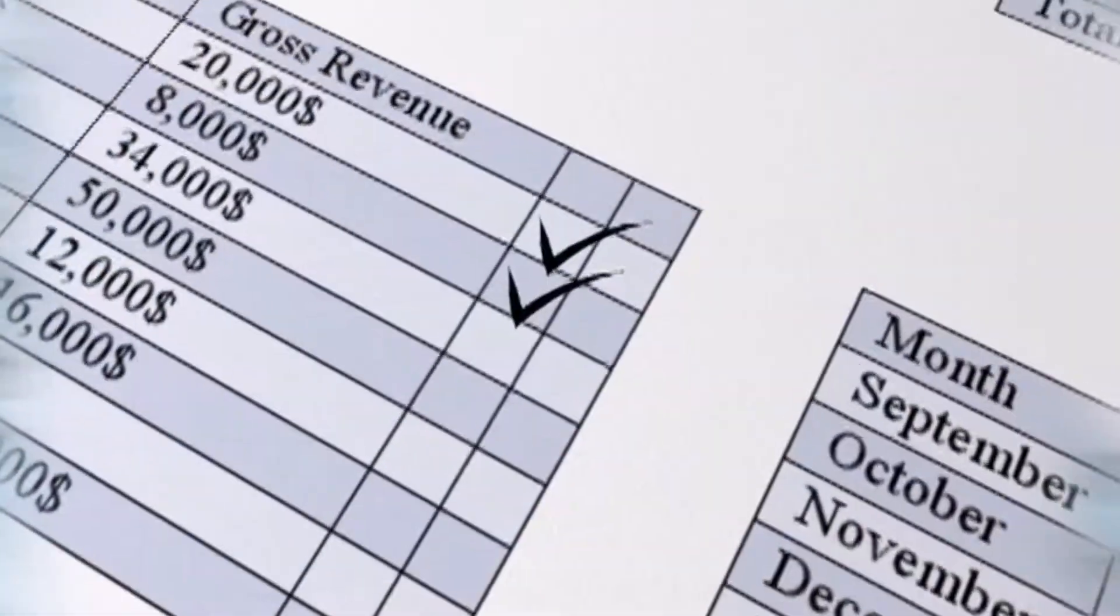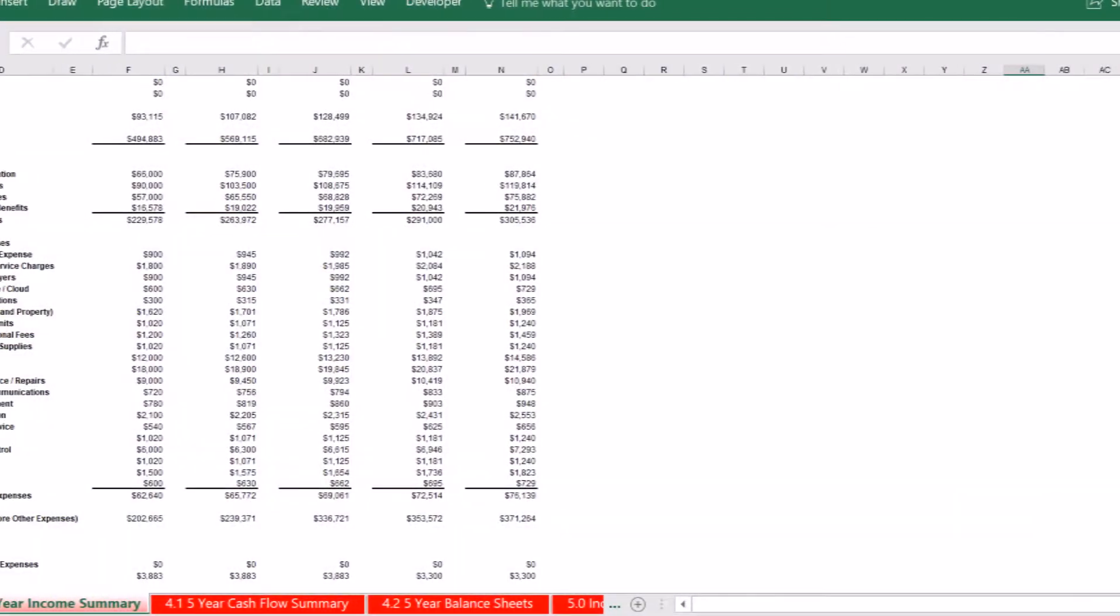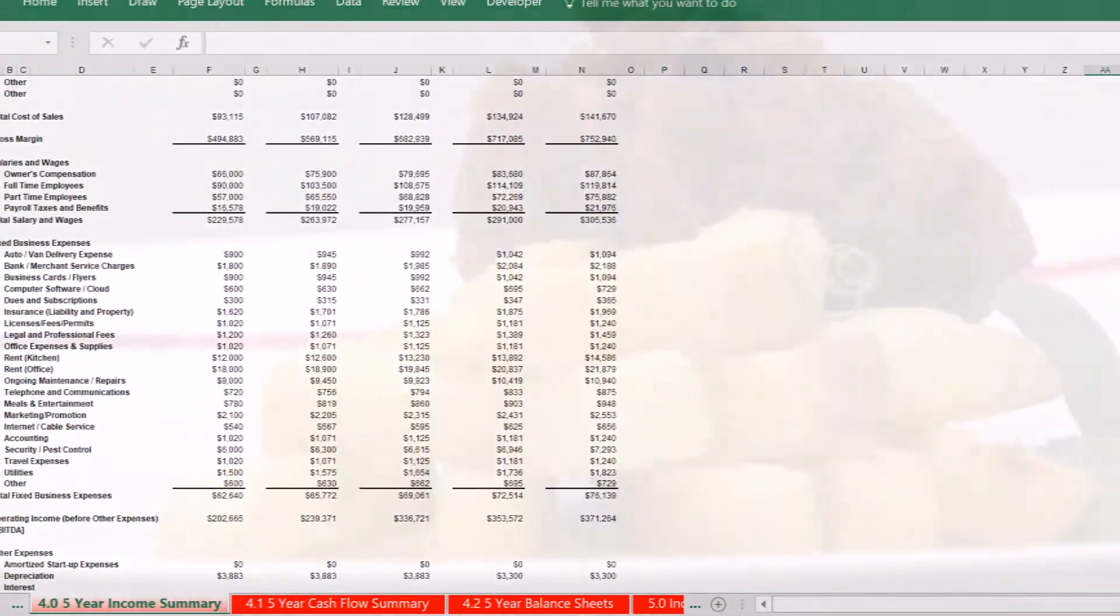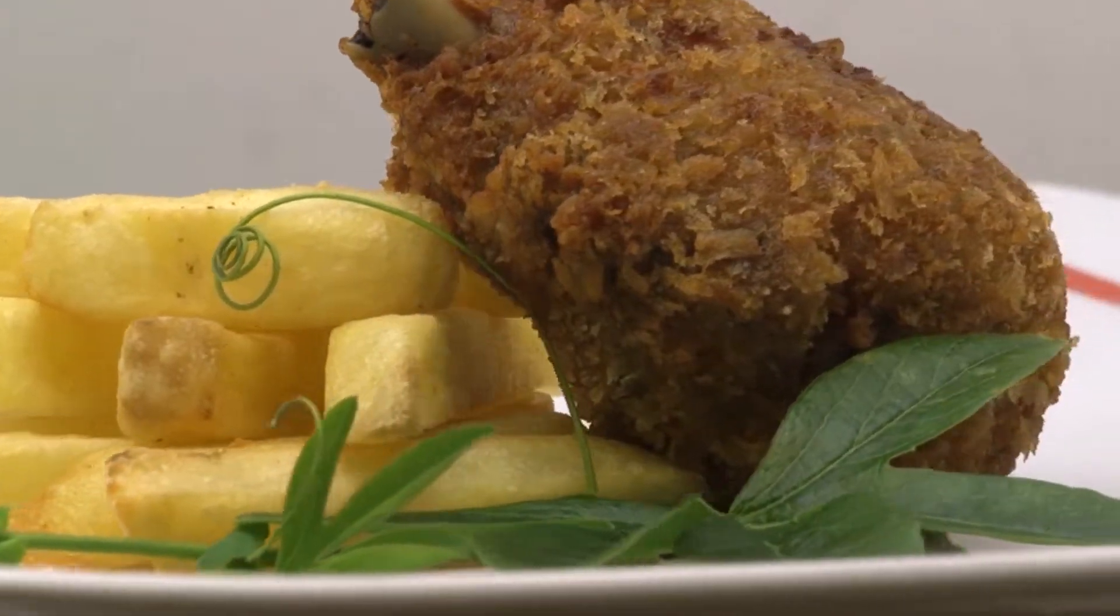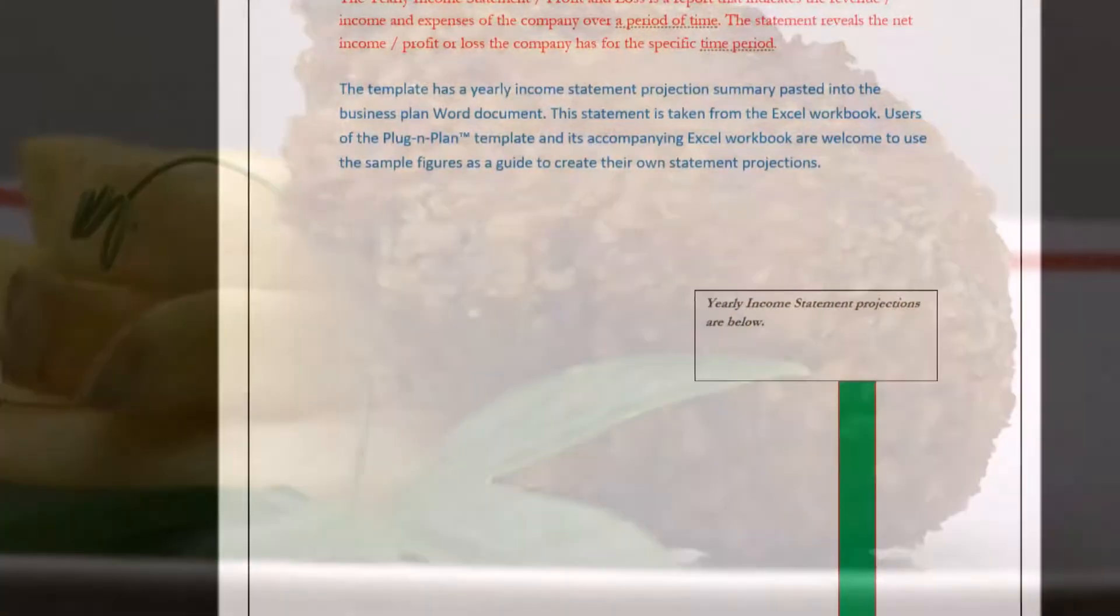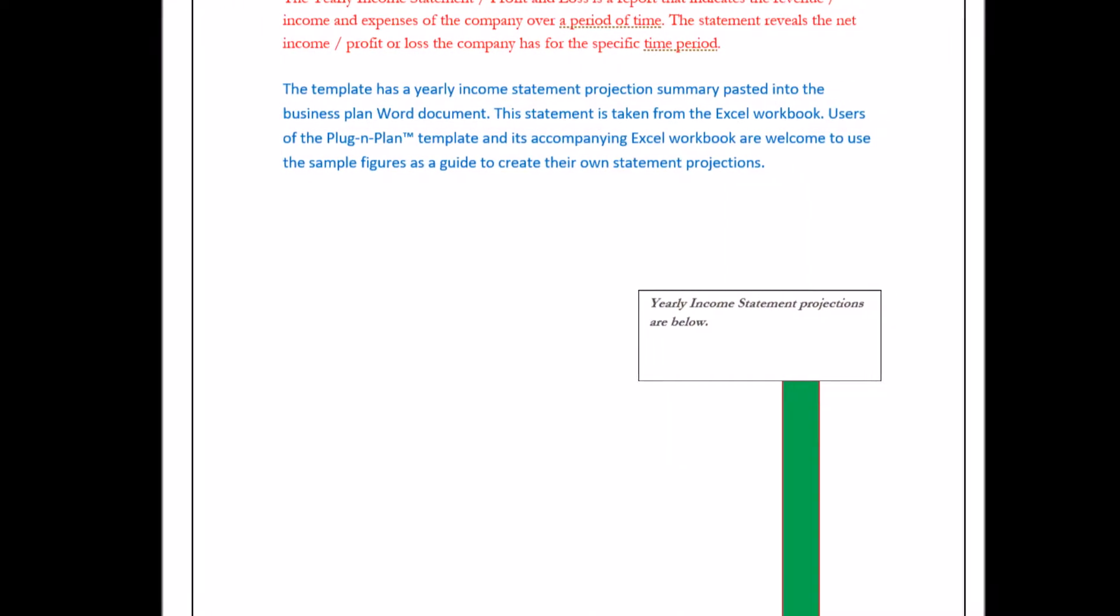The template has a Yearly Income Statement Projection Summary pasted into the Business Plan Word document. This statement is taken from the Excel workbook.